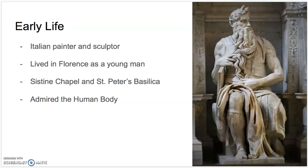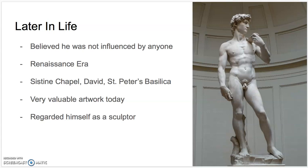Michelangelo often denied that he was influenced by anyone. He believed that his art style was a result of who he was. He became famous during the Renaissance time period because of his ability to make his sculptures look so real and his impressive painting of the Sistine Chapel. Most of Michelangelo's work was done as a sculptor, and for this reason he believed he was a sculptor. This was driven by his appreciation for the human body.